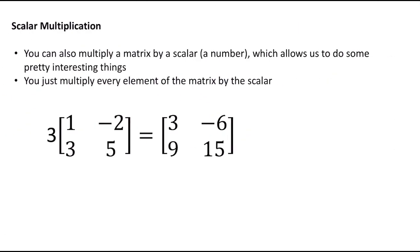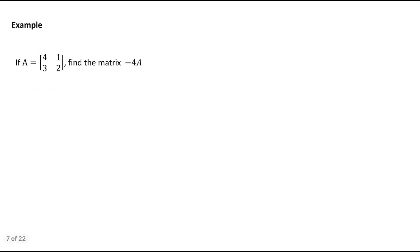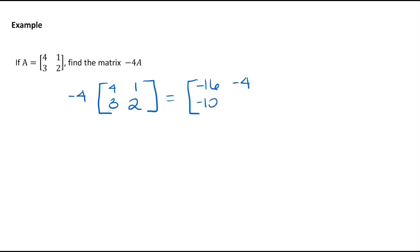Scalar multiplication: you can multiply a matrix by a scalar — just a number — and multiply every element inside by it. The most common mistake is forgetting to multiply one element. Every single element gets multiplied by that scalar. So 3 times 1 is 3, 3 times negative 2 is negative 6, 3 times 3 is 9, 3 times 5 is 15. Let's try: if A equals [4, 1, 3, 2], then negative 4A means multiplying every element by negative 4, giving us negative 16, negative 4, negative 12, negative 8.